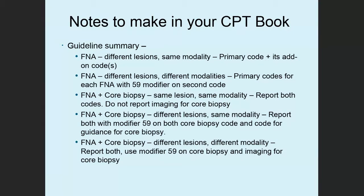Summary of guidelines: FNA, different lesions, same modality — use a primary code and its add-on code or codes depending on how many lesions. FNA, different lesions, different modalities — primary codes for each FNA with Modifier 59 on the second code. FNA plus core biopsy, same lesion, same modality — report both codes; don't report imaging separately for the core biopsy. FNA plus core biopsy, different lesions, same modality — report both with Modifier 59 on the core biopsy code and on the guidance code for the core biopsy. FNA plus core biopsy, different lesions, different modalities — report both using Modifier 59 on the core biopsy and on the imaging for the core biopsy.